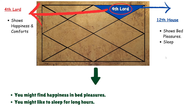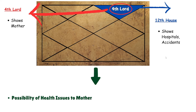The fourth lord shows happiness and comforts, and the twelfth house shows bed pleasures and sleep. So you might find happiness and satisfaction in bed pleasures and might also like to sleep for long hours. The fourth lord also shows your mother, and the twelfth house is the house of accidents and hospitals, so this placement shows the possibility of health issues to the mother if the planet is poorly placed or afflicted.